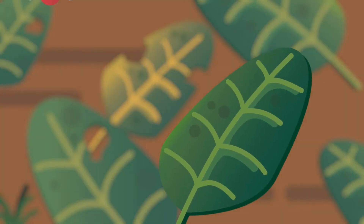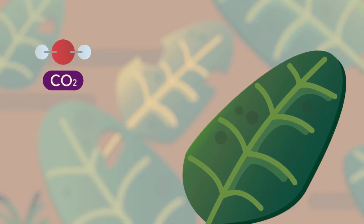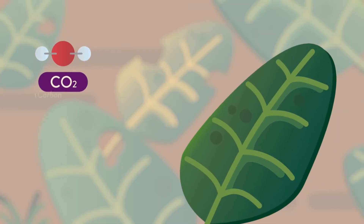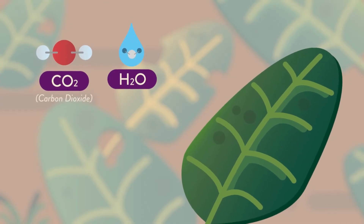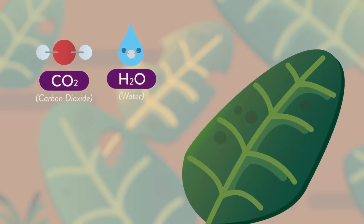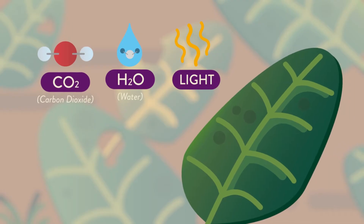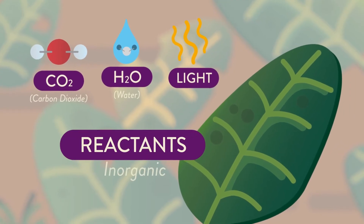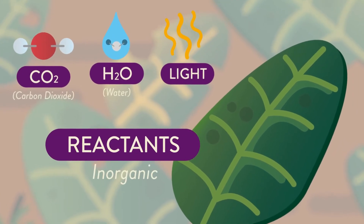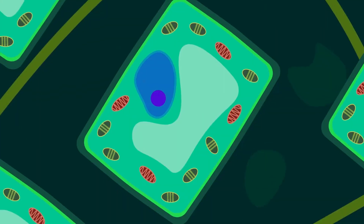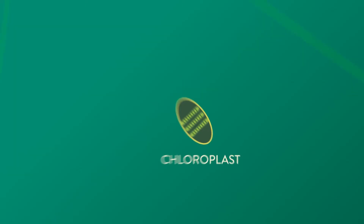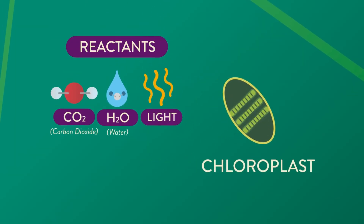The plant takes in raw materials: CO₂, carbon dioxide in Earth speak; H₂O, or water; and sunlight. These raw materials are the reactants. They are inorganic.